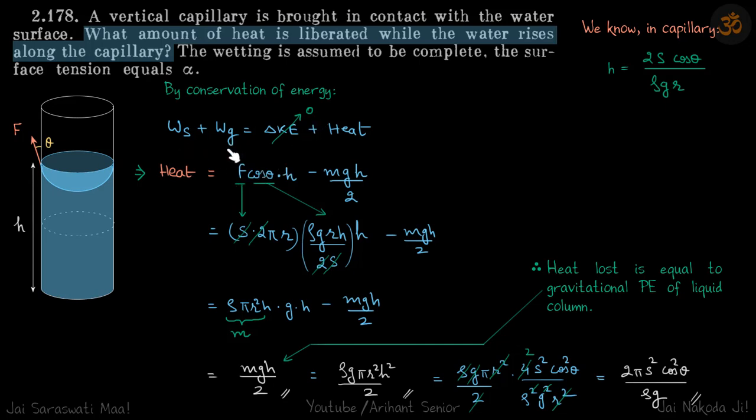Work done by surface tension is F cos θ into H, and work done by gravity is equal to mass of the column into H, mg into H by 2, because the center of mass of the liquid column is here. So minus mg H by 2 because work done by gravity is negative.